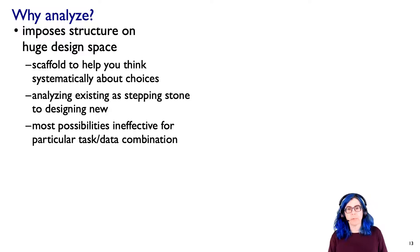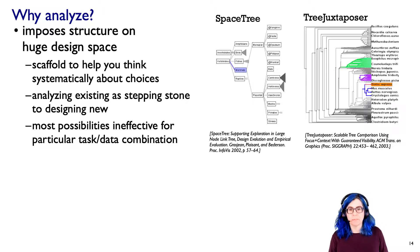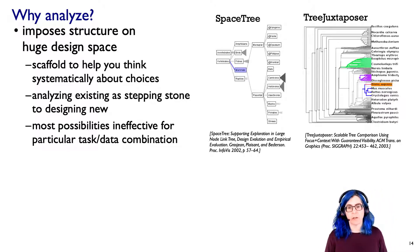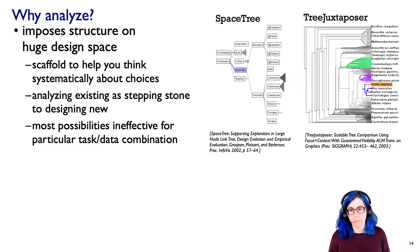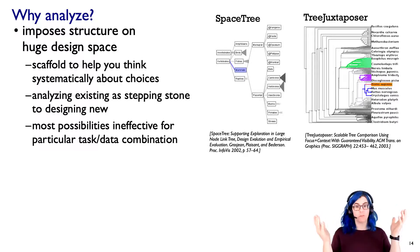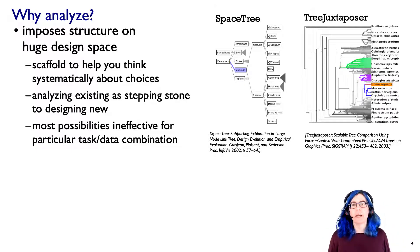Let me give you one example — I'm not going to talk about the whole analysis framework in this intro video, but I want to give you a flavor for how it works. Here are two systems, both for visualizing really large trees — in this case, trees of ancestral relationships between species. One is SpaceTree from Maryland; the other is TreeJuxtaposer from my own lab. If you just look at these, you can say they're different — I see different pixels on the screen — but that's not very helpful. We want to understand ways in which they're similar and ways in which they're different.